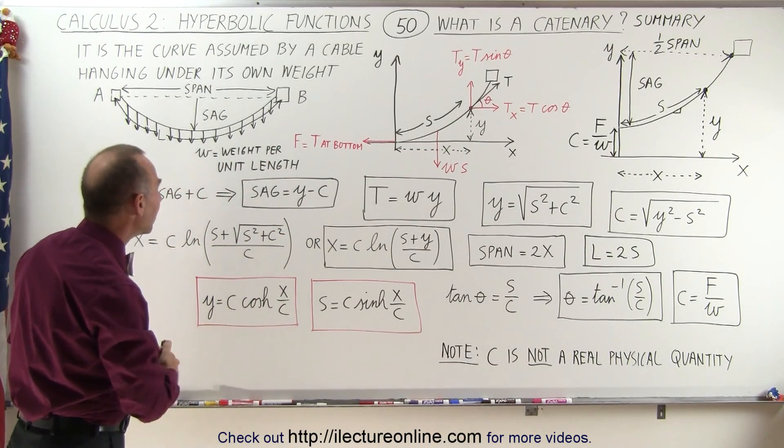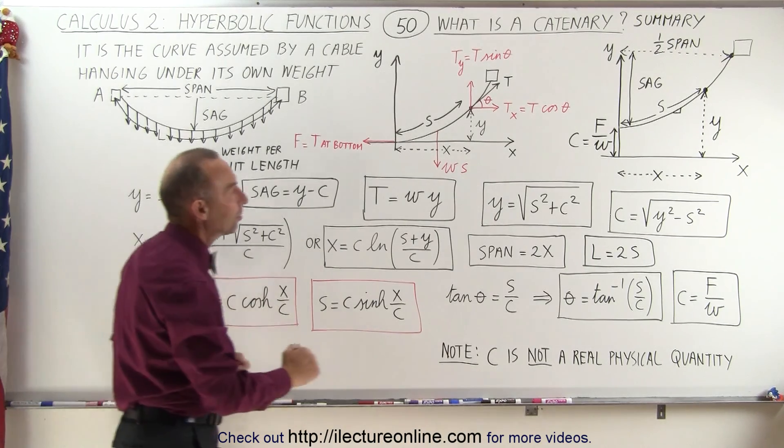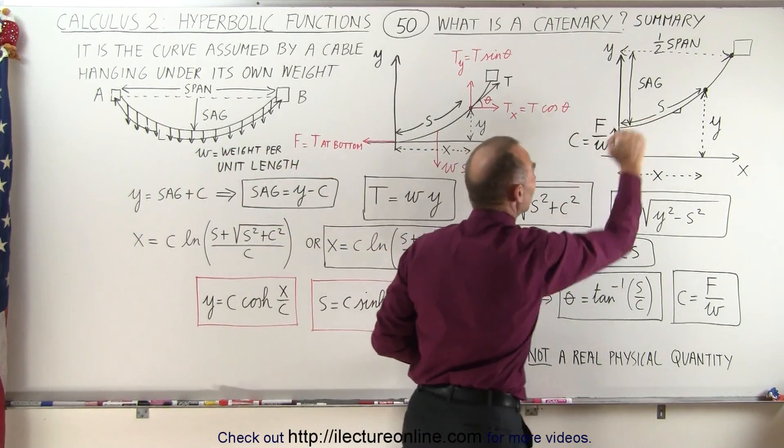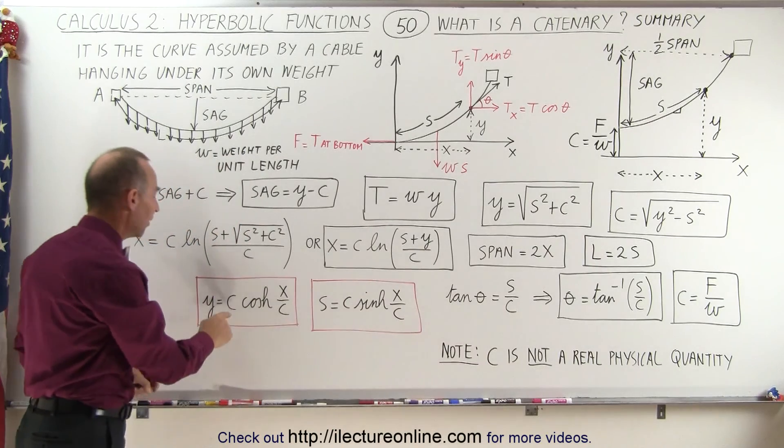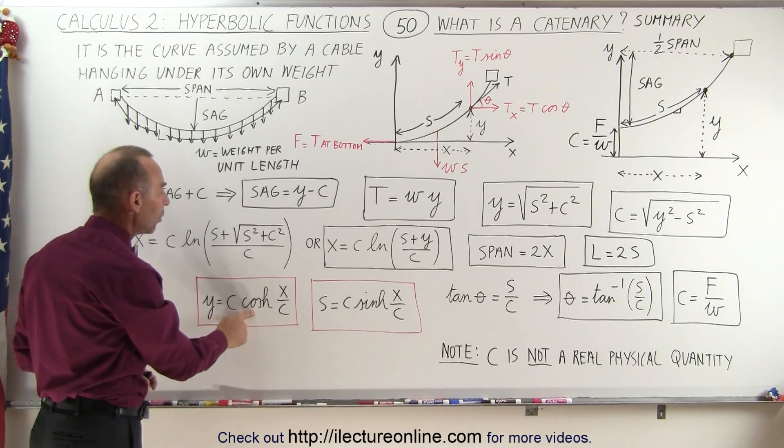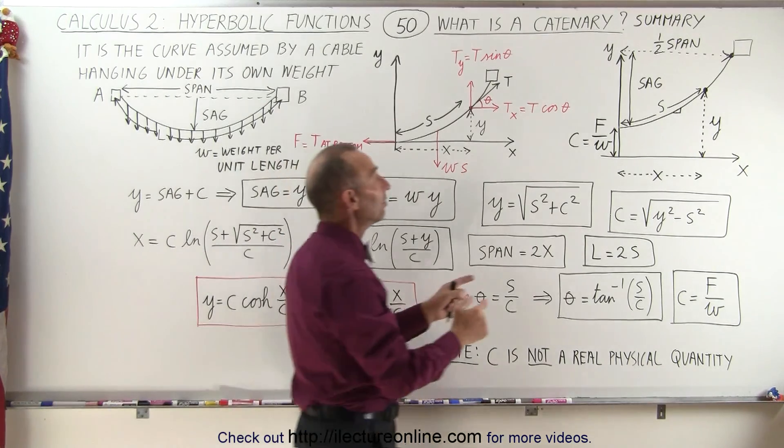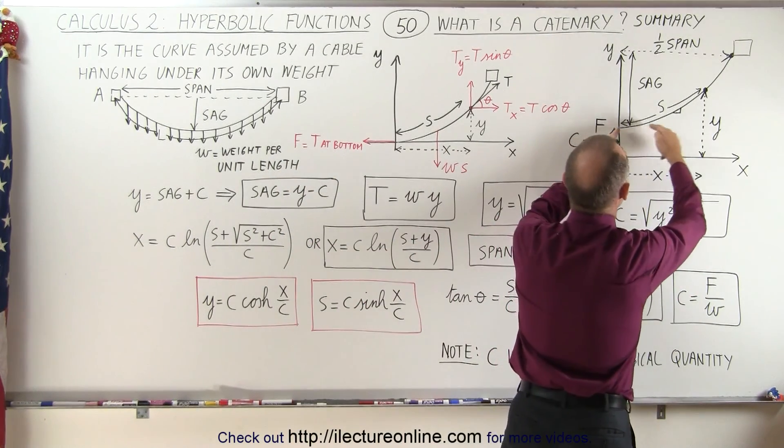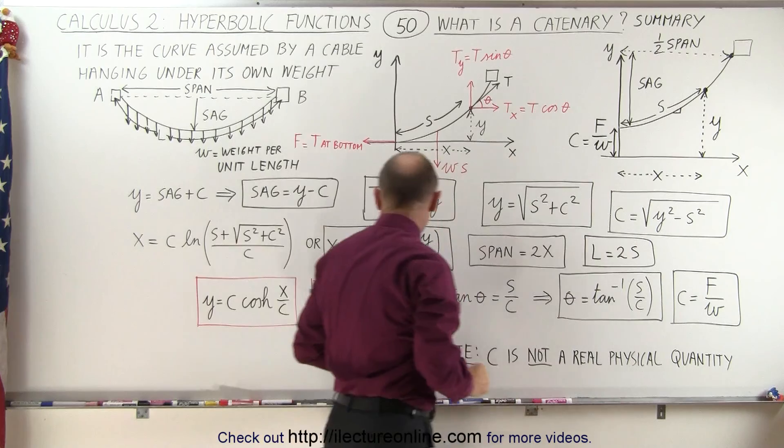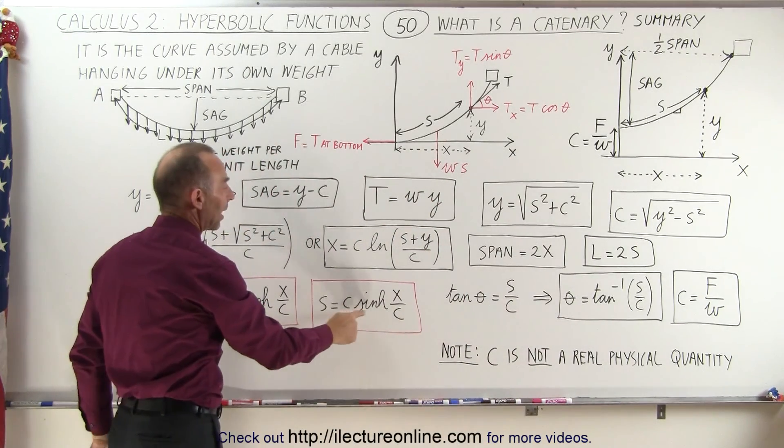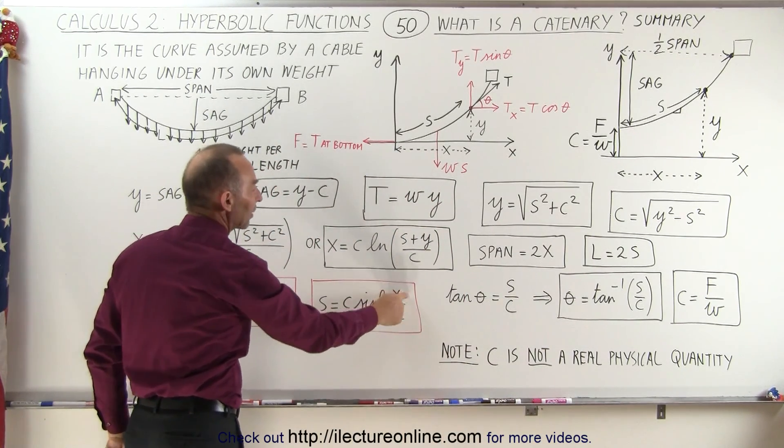So bottom line is we found the relationship between y, the distance from the origin, to any point on the cable in terms of c times the hyperbolic cosine of x over c. We also define the length from the bottom of the cable to any point on the cable as being equal to c times the hyperbolic sine of x over c.